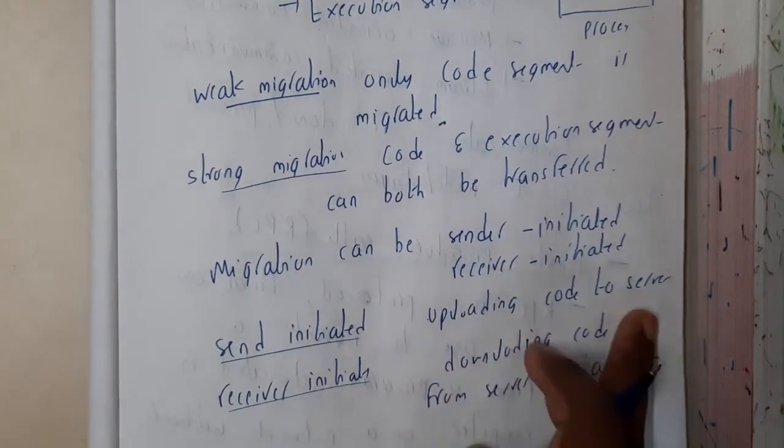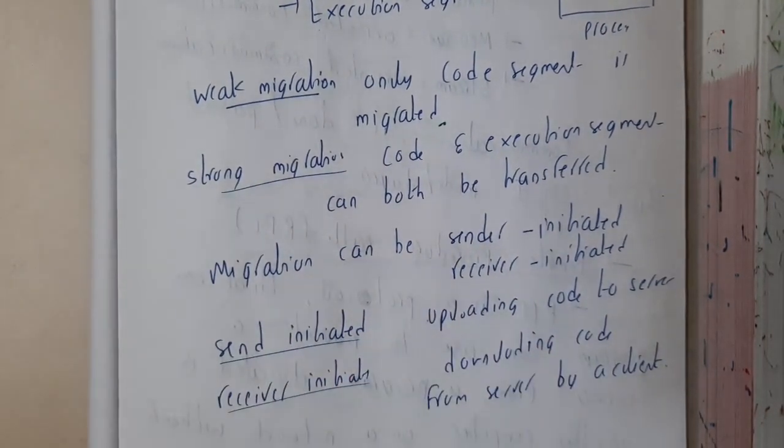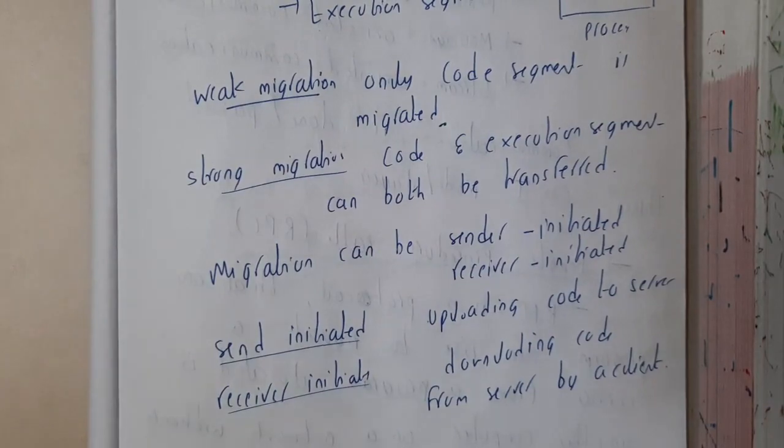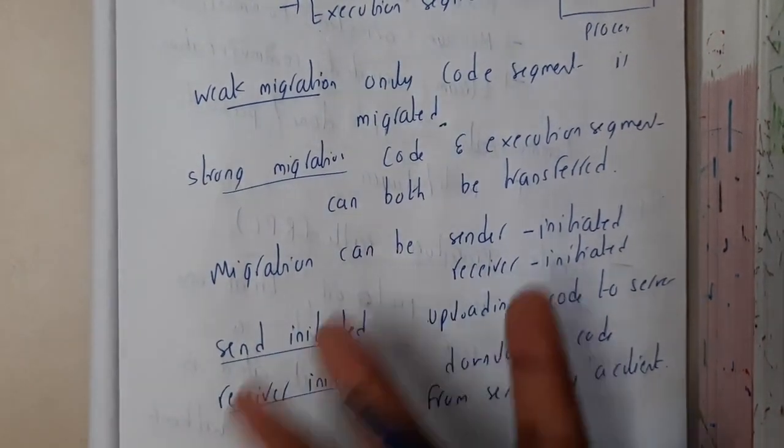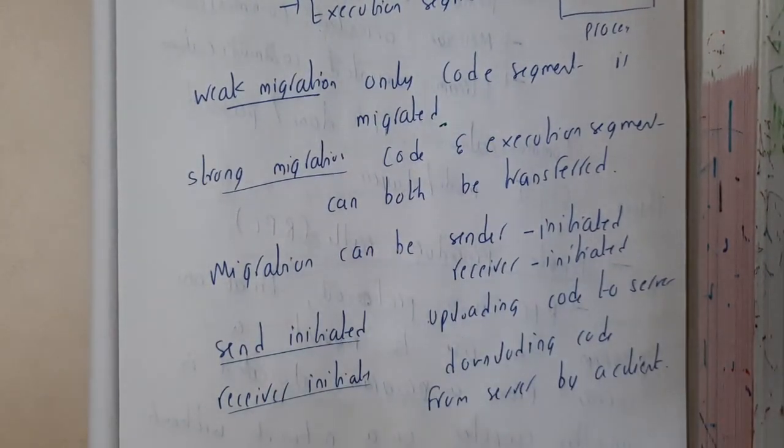Sender-initiated means uploading the code to the server, and receiver-initiated means downloading the code from the server. As he is sending, he'll be uploading, and he is receiving, so he's downloading. In that way, it will be working.